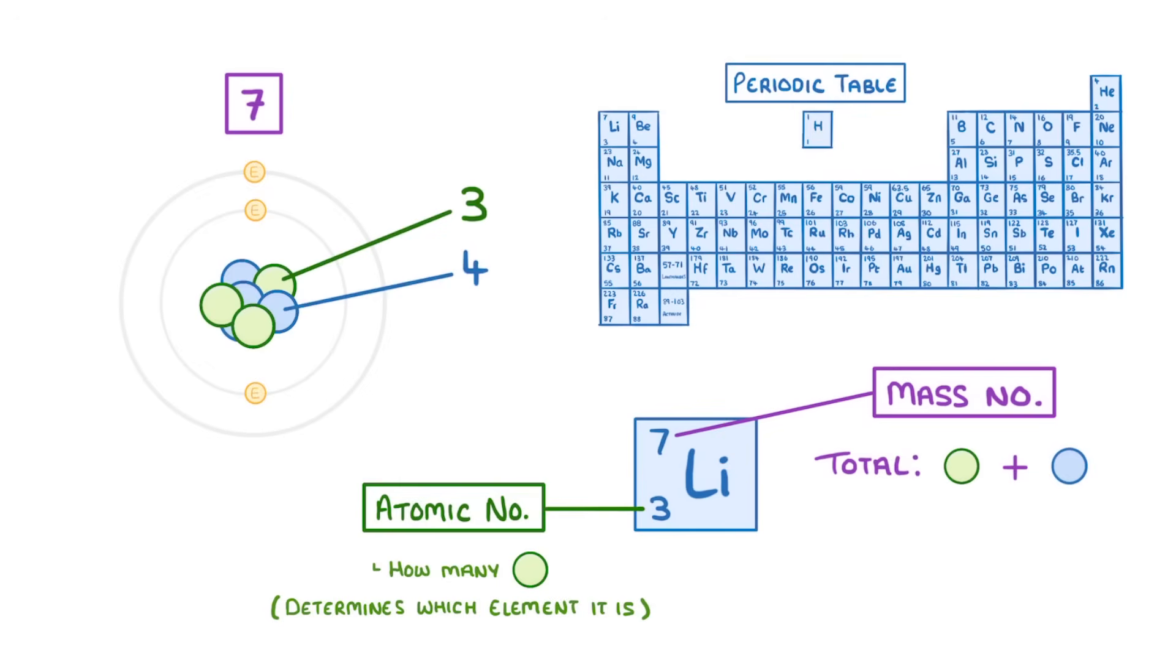Now the nuclear symbol doesn't directly tell you the number of electrons. You just have to remember that the number of protons and electrons in an atom is the same. Which is why lithium has three electrons.